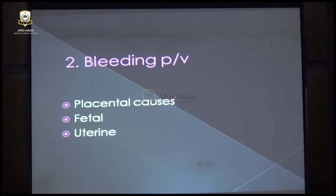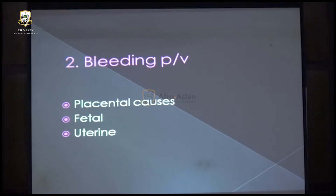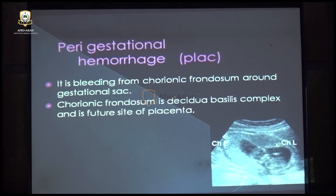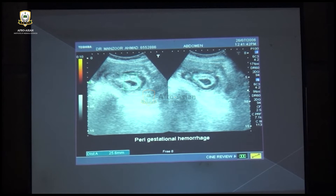The second commonest presentation is vaginal bleeding, which may or may not be associated with pain. There are various etiological factors — placental, fetal, or uterine causes. Among placental causes is the peri-gestational hematoma, which is bleeding from the chorionic frondosum — the future site of the placenta. On ultrasound, we see a rim of fluid around the gestational sac, labeled as peri-gestational hemorrhage, which may cause vaginal bleeding.